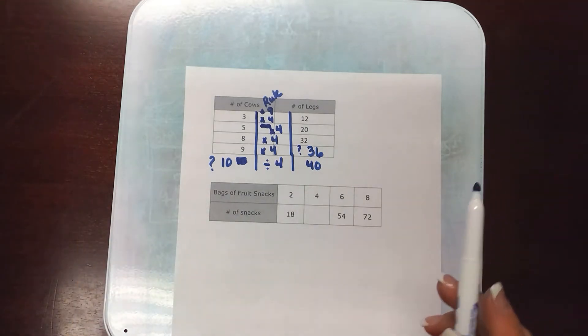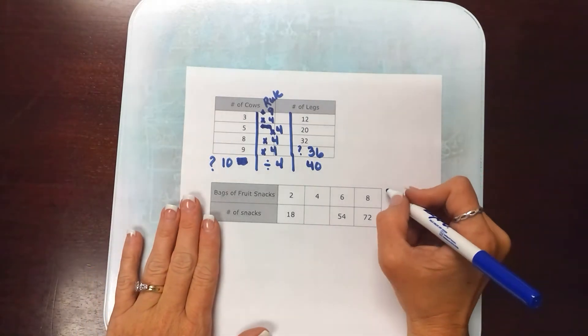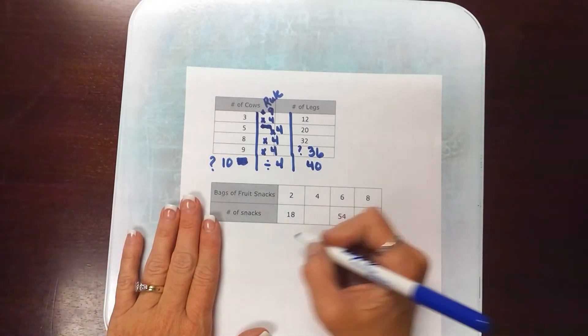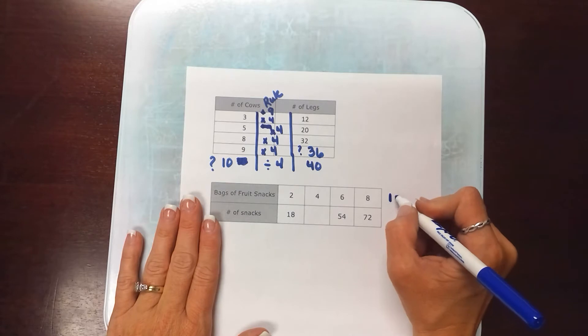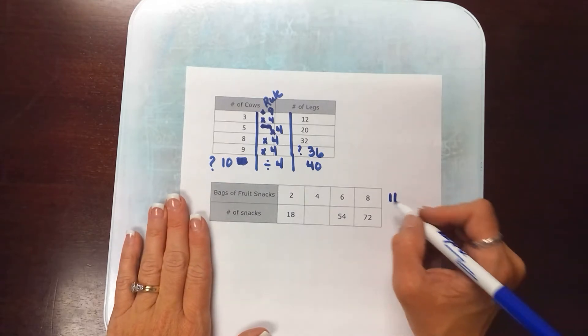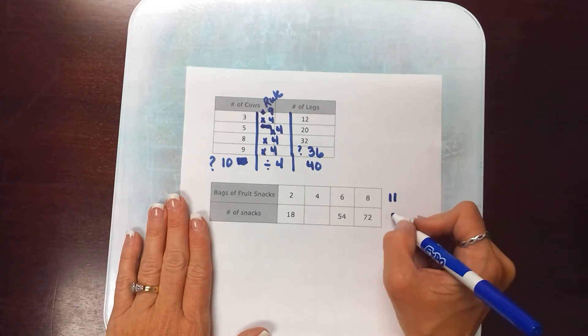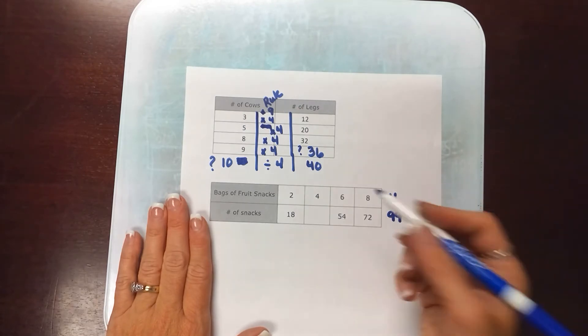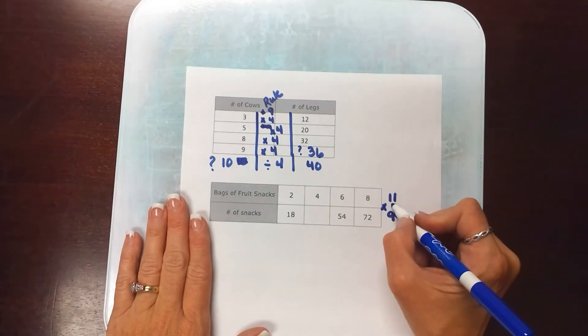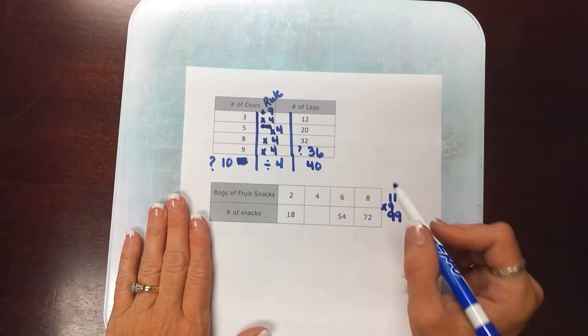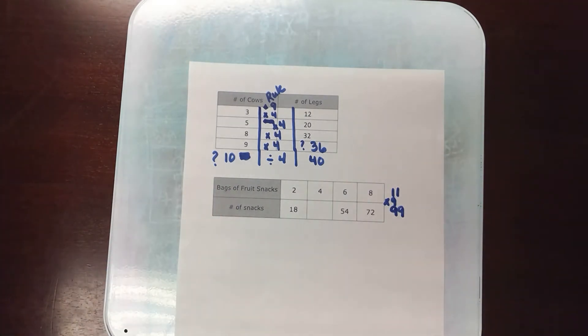Make sure you're doing vertical horizontal tables and I think students may have to extend the tables. So it may say what would be the number of snacks in 11 bags of fruit snacks. So they would say 99 based on the table because this rule here is times 9. They may have to extend the table as well.